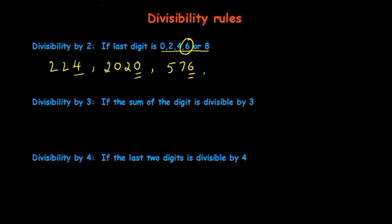If you take a large number like 237,527, is it divisible by 2? No, it is not divisible by 2 because the last digit is 7, an odd number — it is not 0, 2, 4, 6, or 8. But if you take 237,528, the last digit is 8, so it is divisible by 2.